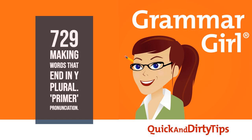So that's your tidbit for today. Common nouns that end in a consonant plus Y usually take an I-E-S when they become plural. Common nouns that end in a vowel plus Y usually just take an S. And when you're turning a proper noun that ends in Y into a plural, no matter what, just add S. That segment was written by Samantha Enslin, who runs Dragonfly Editorial. You can find her at dragonflyeditorial.com or on Twitter as dragonflyedit.